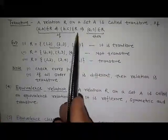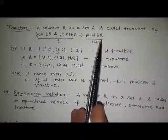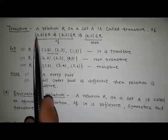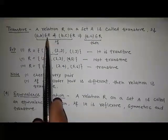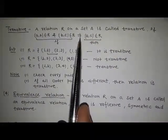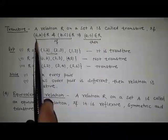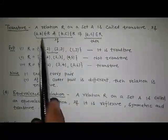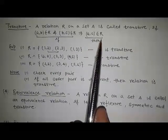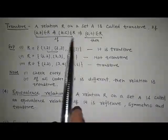Listen again: (a, b) element of R and (b, c) element of R implies (a, c) element of R. It means if these pairs are present in the relation, then (a, c) must also be present in the given relation.